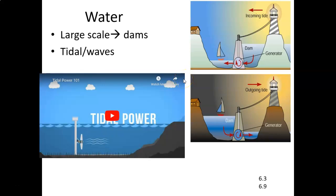We'll start with water. Water can be used in a couple of different ways. On a large scale, what you tend to think of are dams — hydropower dams like the Hoover Dam. But also getting more attention is taking advantage of tidal differences, the height tidal differences, as well as the perpetual motion of waves.